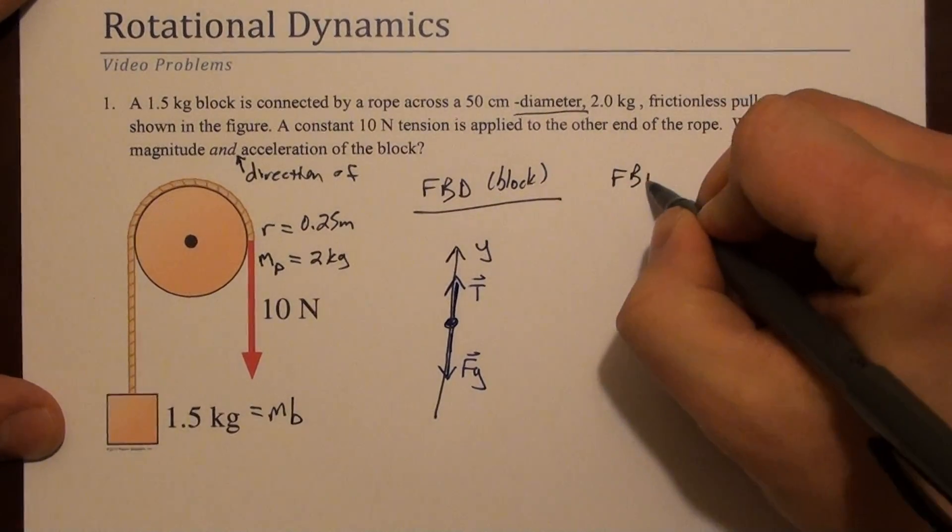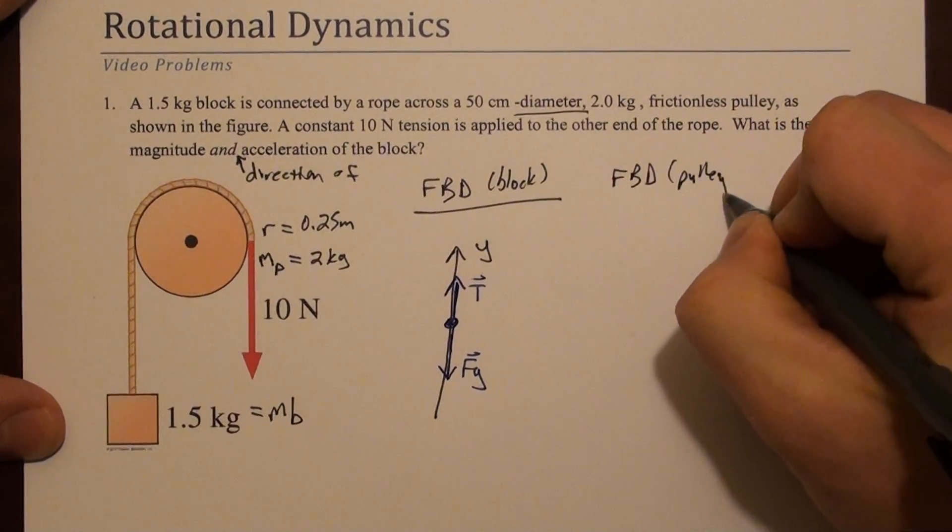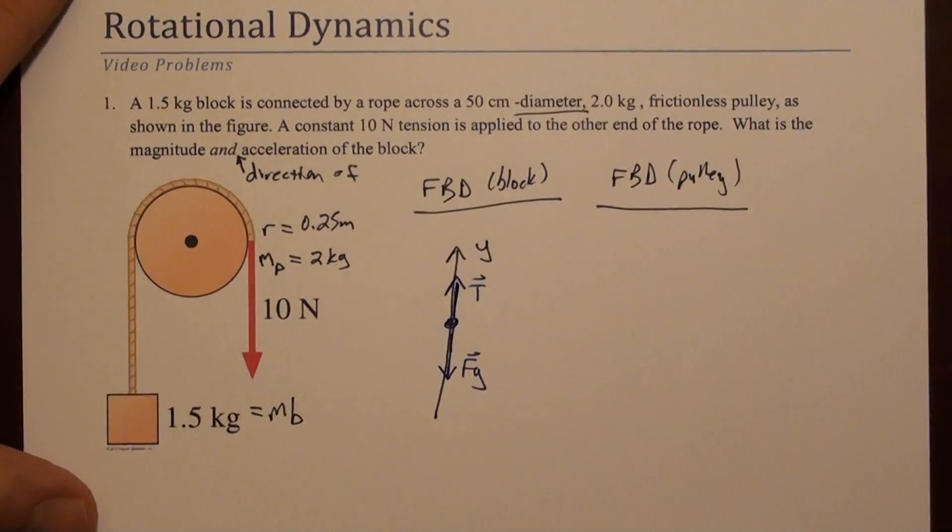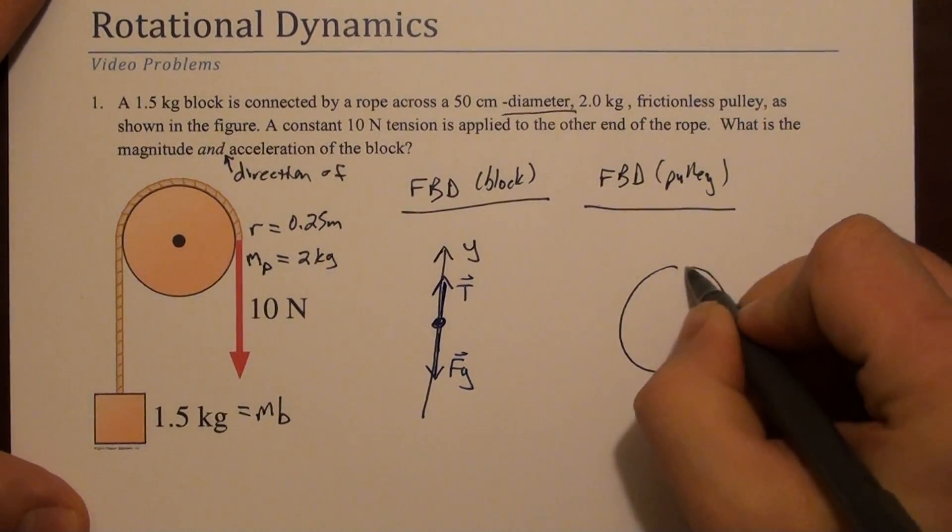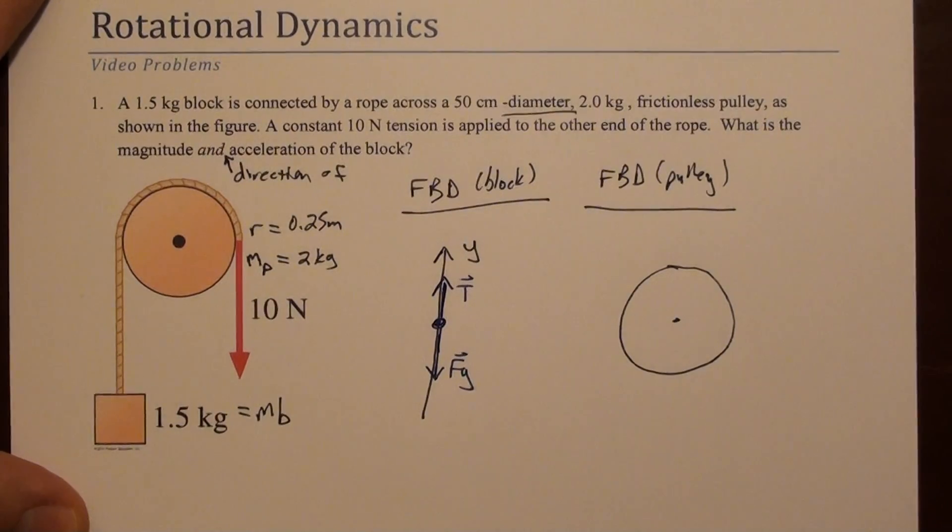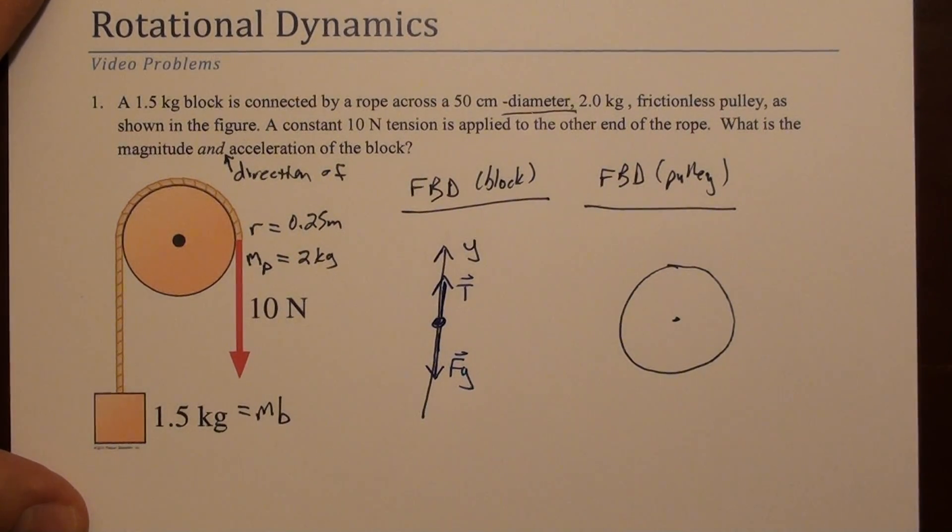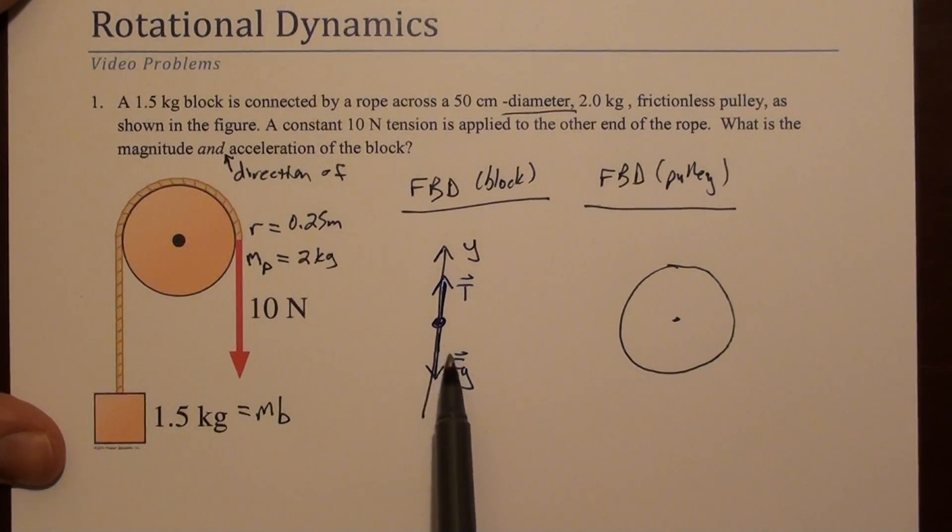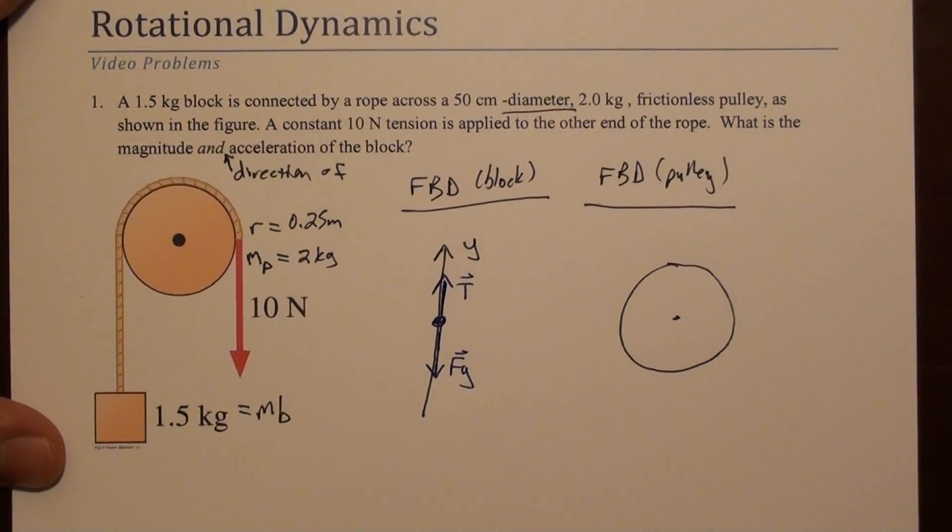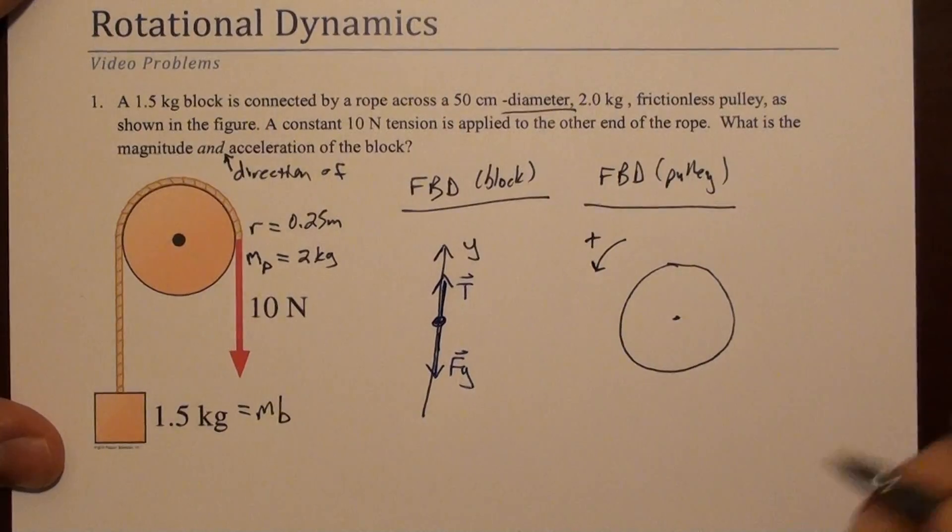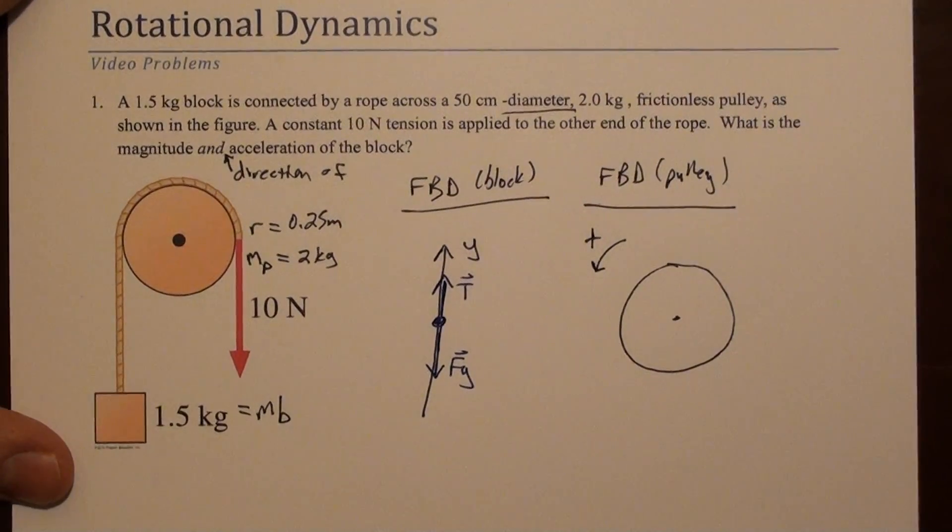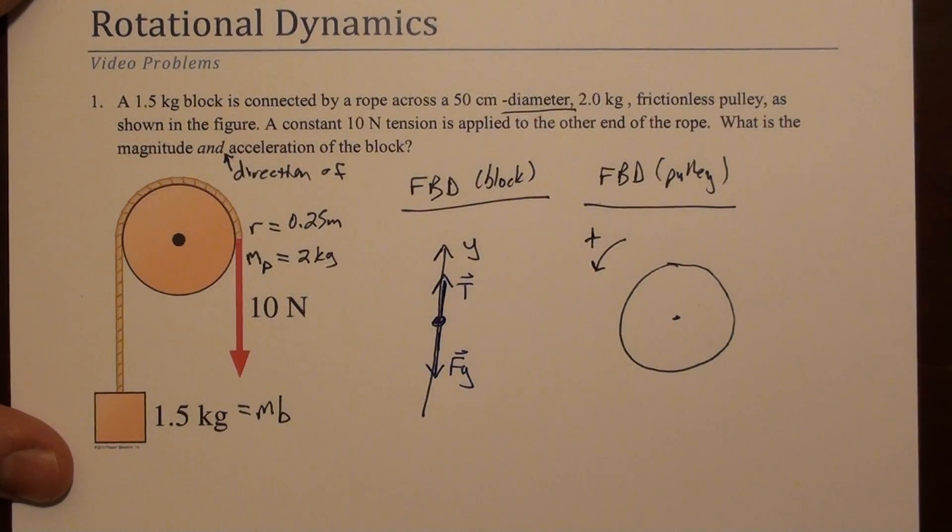So now we can draw a free body diagram for the pulley. And this is going to be an extended diagram, which just means it's not going to be a point. So we'll draw this as a circle. When we draw a free body diagram for something that's not a point, we choose a direction to be positive. We chose up to be positive. So for here, our convention is to choose counterclockwise to be positive rotation.